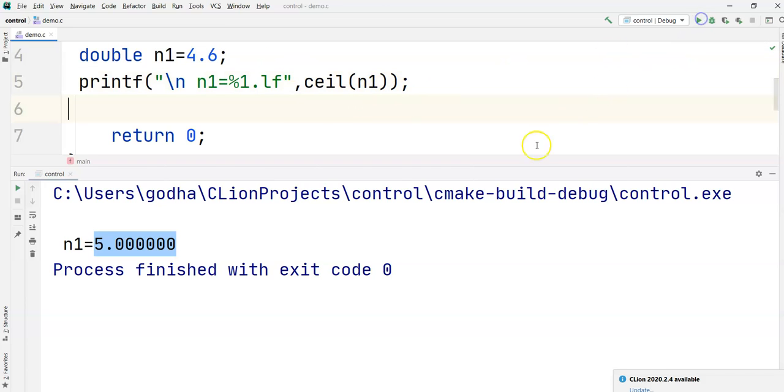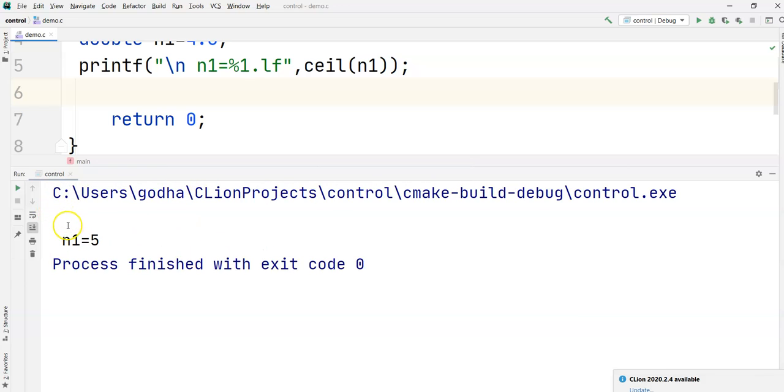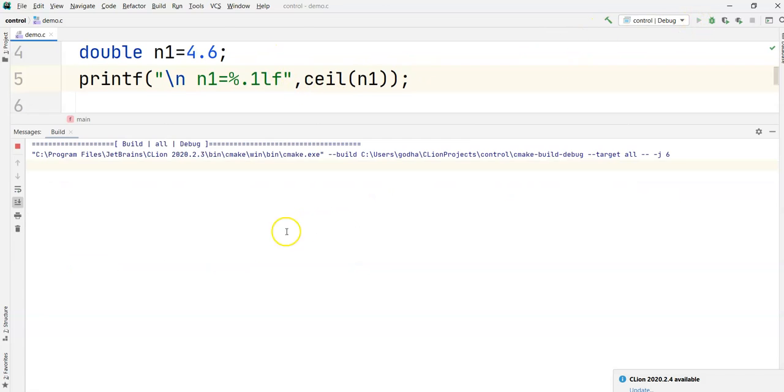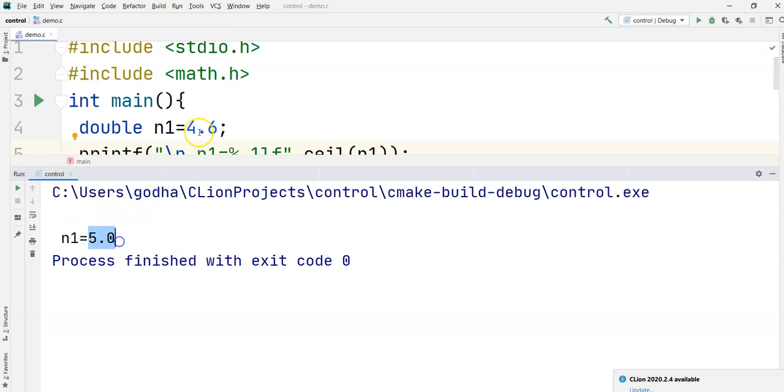So again run the program, I may get just 5.0 as the output or 5. So you can say %.1lf and run the program again if you want the decimal. Yeah, you are getting 5.0.